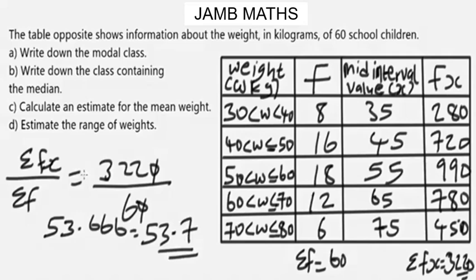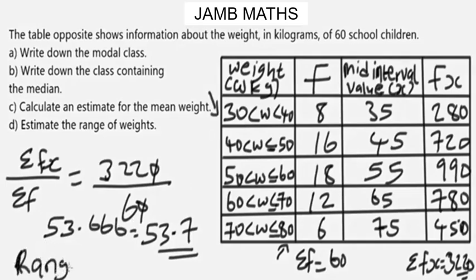Lastly, we need to estimate the range of weights. The range is the highest value minus the lowest value. For this grouped frequency table, it is the difference between the highest and lowest class boundaries. The highest class boundary is 80 and the lowest is 30, so the range = 80 − 30 = 50 kg.